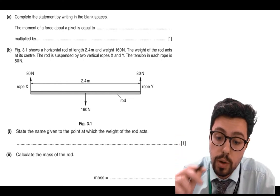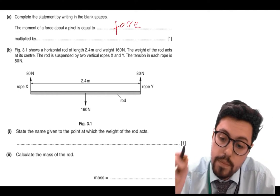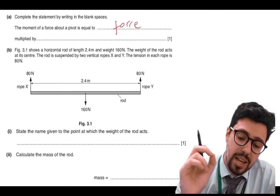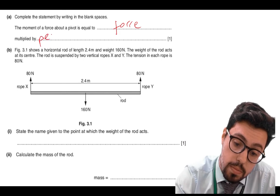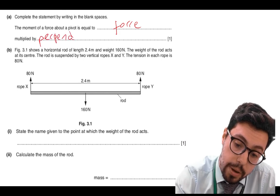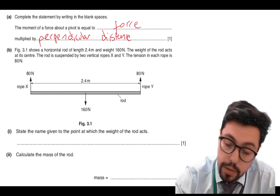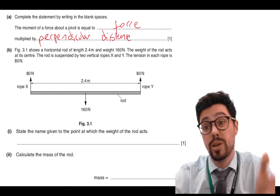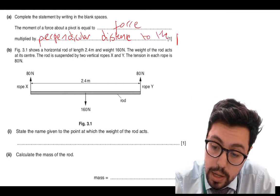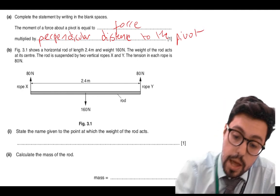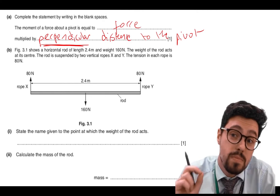A moment of a force is equal to the force multiplied by the perpendicular distance — and this is where people get it wrong — you must write 'perpendicular distance to the pivot.' If you do not write the word perpendicular in this definition, you do not get the mark.